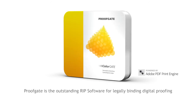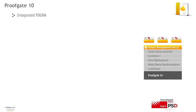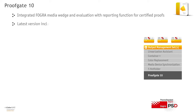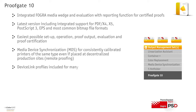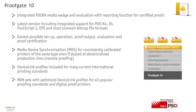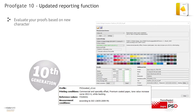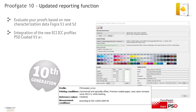ProofGate 10 is the outstanding RIP software for legally binding digital proofing in commercial and industrial printing based on international color standards, such as ISO, Process Standard Digital, as well as FOGRA, for maximum color accuracy. ProofGate offers an integrated FOGRA media wedge and evaluation with reporting functions for certified proofs. ProofGate users stay up-to-date with direct support of PDF-X4, X5, PostScript-3, EPS and Raster data. Various MIM sets are available, which offer optimized device link profiles for all popular proofing standards and digital proof printers.